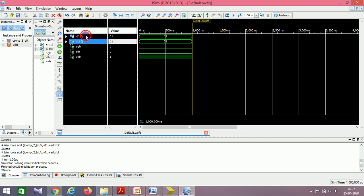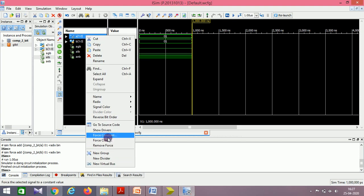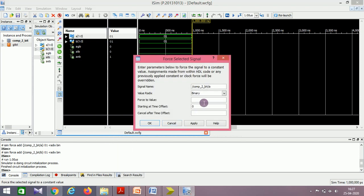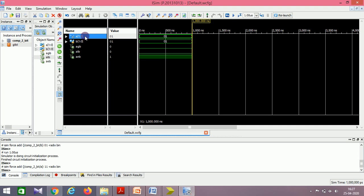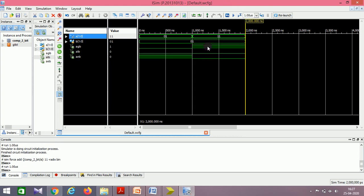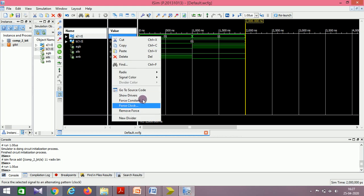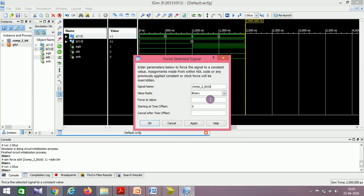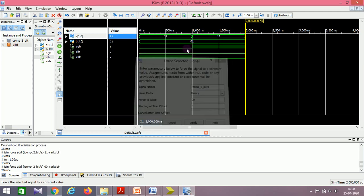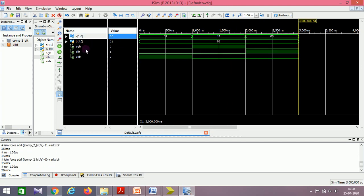Now I force the value of a to 11. So a is 11, b is 01, so agb should be made 1, aeb should go low. The same thing is happening here: agb is 1, aeb is going low. Now I'll make a go to the minimum, 00. I'll run it. Now alb will be high, the rest two will be going to 0. This is about the 2-bit comparator. In the same way, you can implement n-bit comparator—you can design an 8-bit comparator or so on.